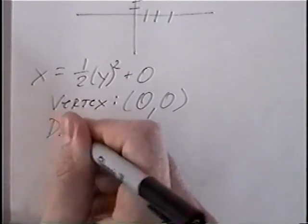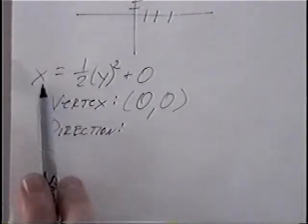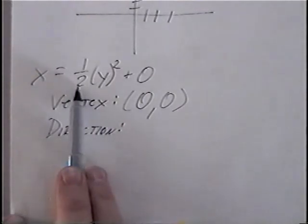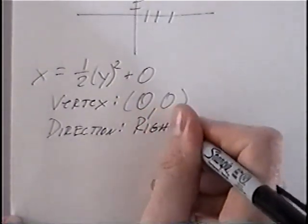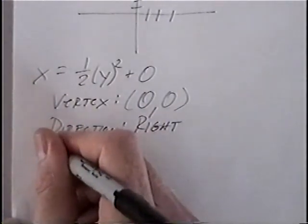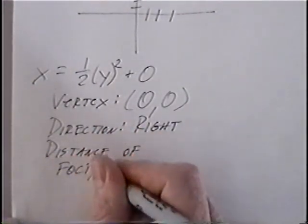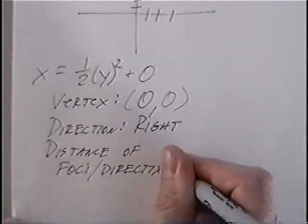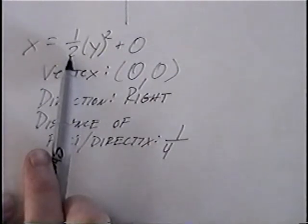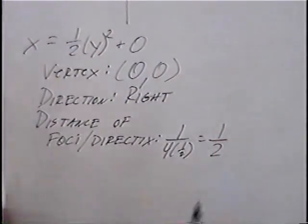Find the direction. Normally, parabolas either go up or down. Since the x and y values are switched, now the parabolas will either open to the right or open to the left. If a is a positive number, it will go in the positive direction, which would be to the right. If it was a negative number, then the direction would go to the left. The distance of the foci and directrix would be 1 over 4a. A again is the number outside the parentheses, which would be 1/2. So the distance would be 1/2.